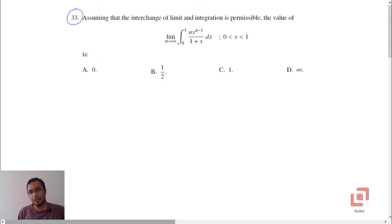This question is based on definite integration as well as the L'Hôpital's rule. Assuming that the interchange of limit and integration is permissible, the value of limit as n tends to infinity of the integral from 0 to 1, n times x raised to n minus 1 divided by 1 plus x dx. Clearly x lies between 0 and 1. The options are: 0, 1/2, 1, infinity.